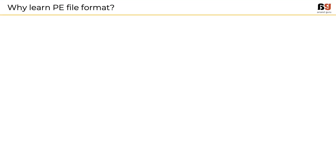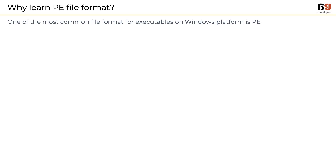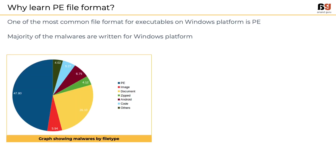Let's start by understanding why one should learn about PE file format. PE is one of the most common file formats for executables on the Windows platform. Because the number of people using Microsoft operating systems is huge, we usually see more malware written for Windows. A graph shows that almost 50% of malware written is in PE file format, followed by document types like Word, PDF, PPT, etc. Considering all these factors, it is worth investing our time in learning about the PE file structure.